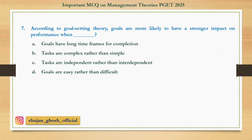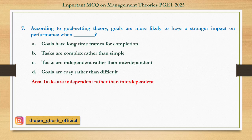Question number 7: According to goal setting theory, goals are more likely to have a stronger impact on performance when — Option A: Goals have long time frames for completion. B: Tasks are complex rather than simple. C: Tasks are independent rather than interdependent. D: Goals are easy rather than difficult. Answer is Tasks are independent rather than interdependent.